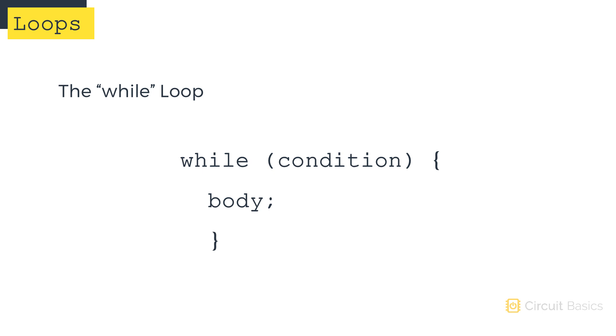One common type of loop is the while loop. In a while loop, the program enters the loop only if the condition inside the parentheses is true. The sketch will execute the body code in the loop as long as the condition remains true.